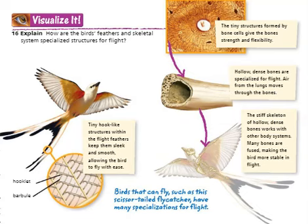Tiny hook-like structures within the flight feathers keep them sleek and smooth, allowing the bird to fly with ease. Birds that can fly, such as this scissor-tailed flycatcher, have many specializations for flight.